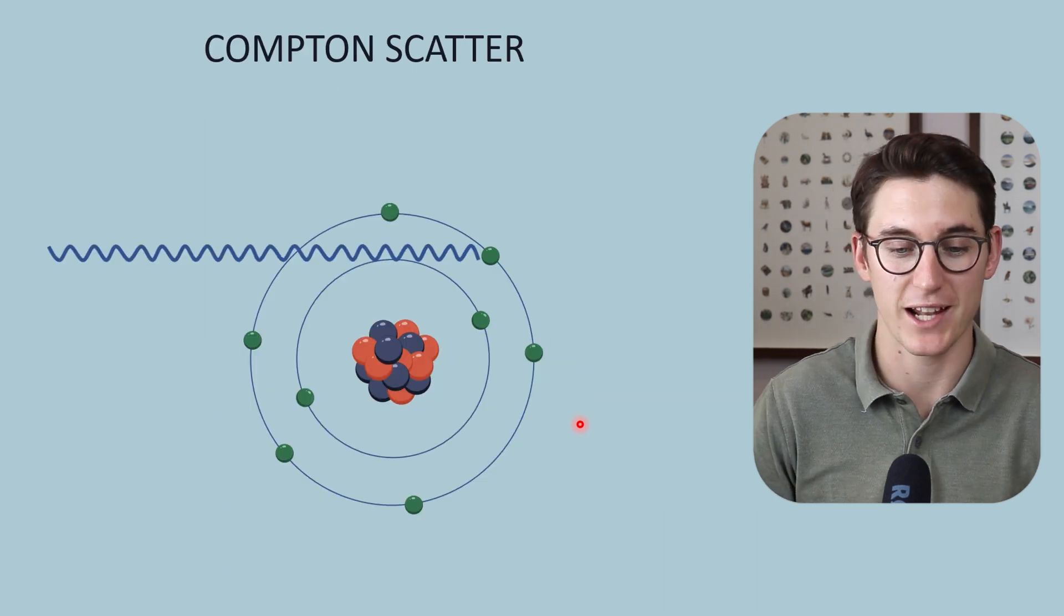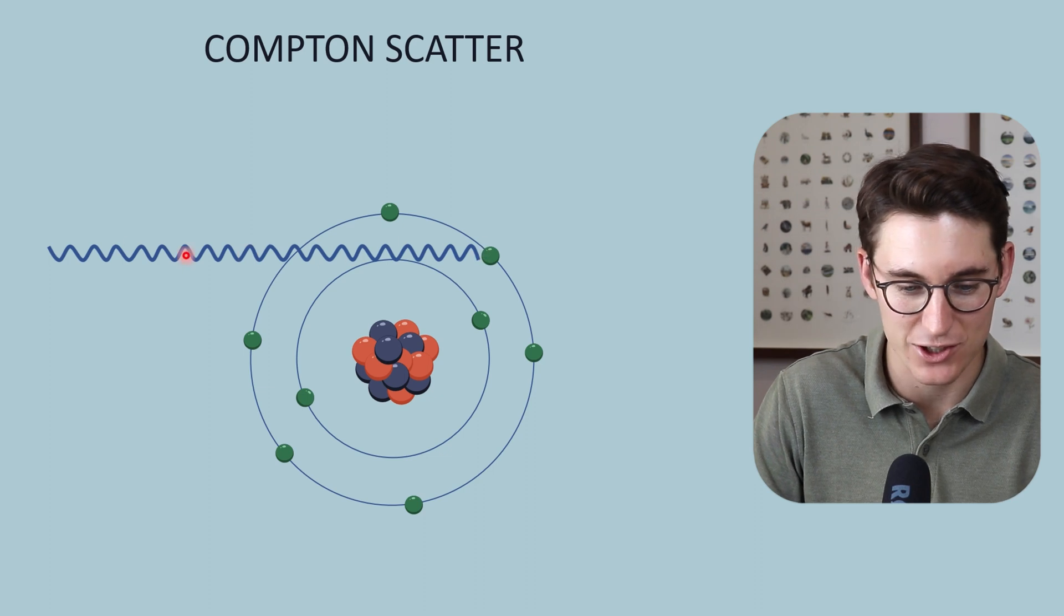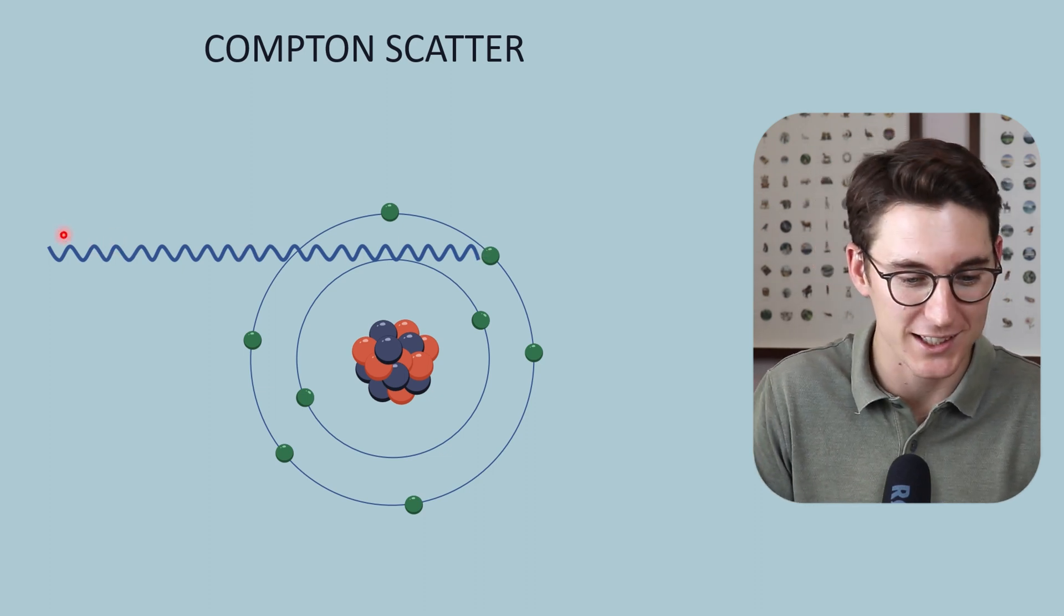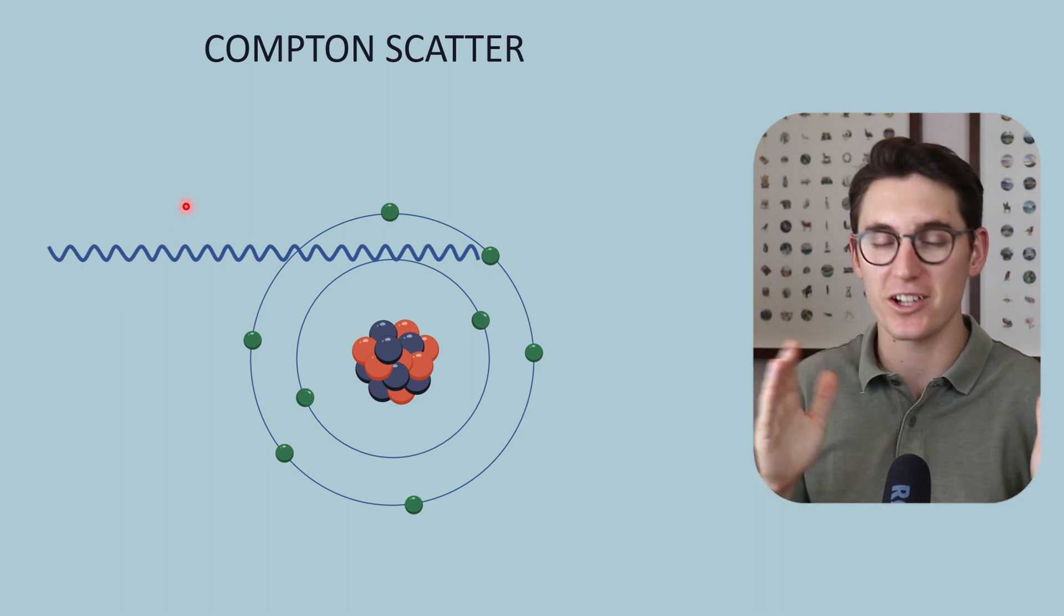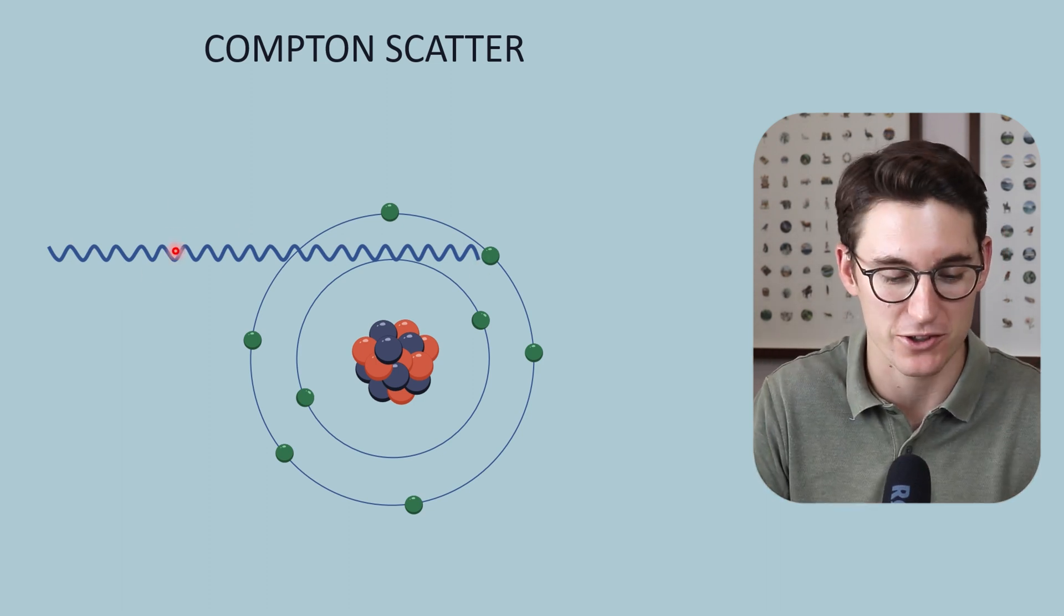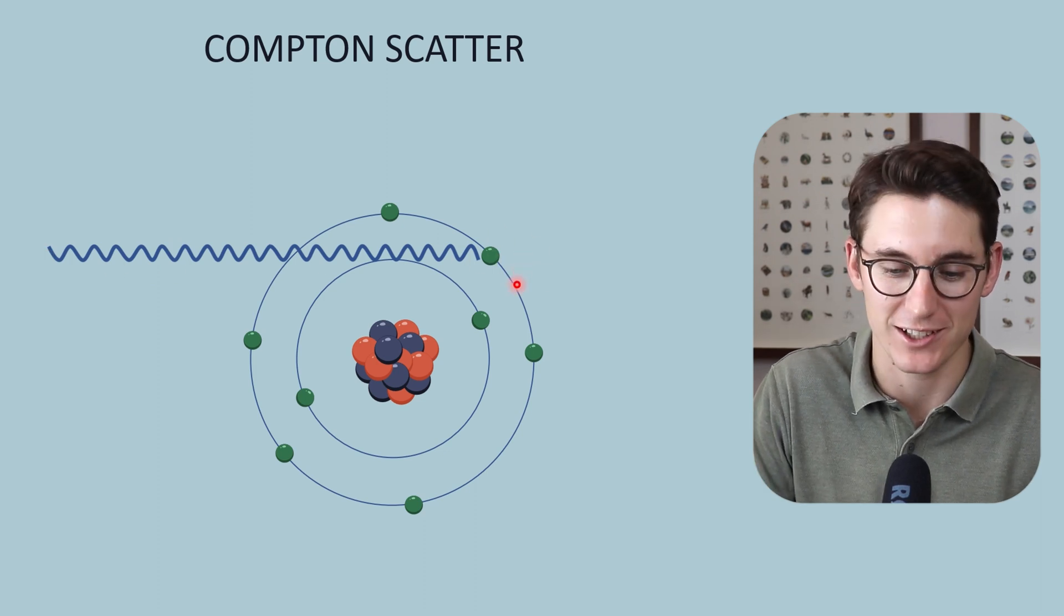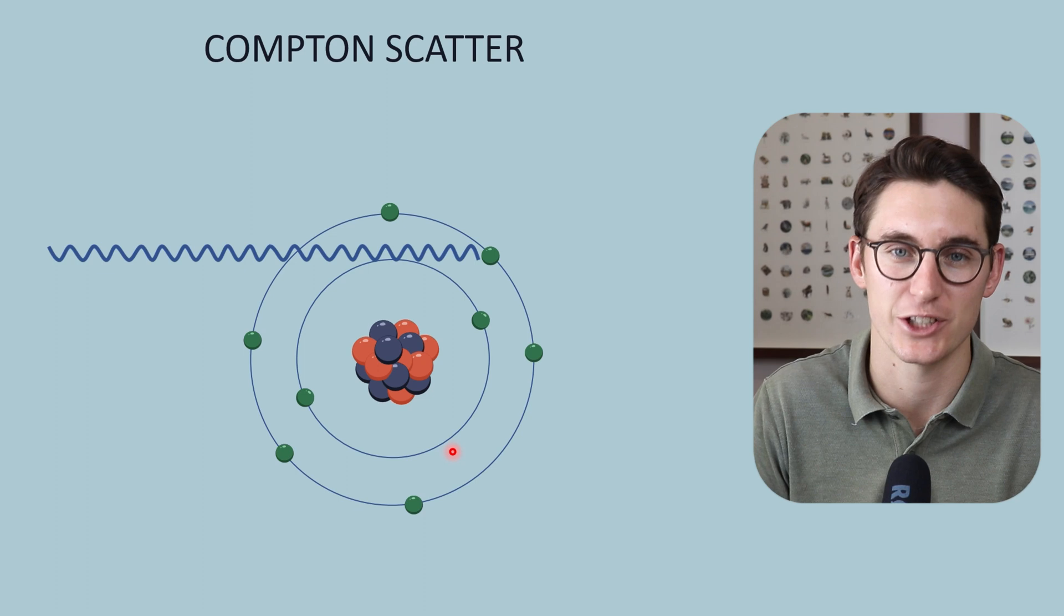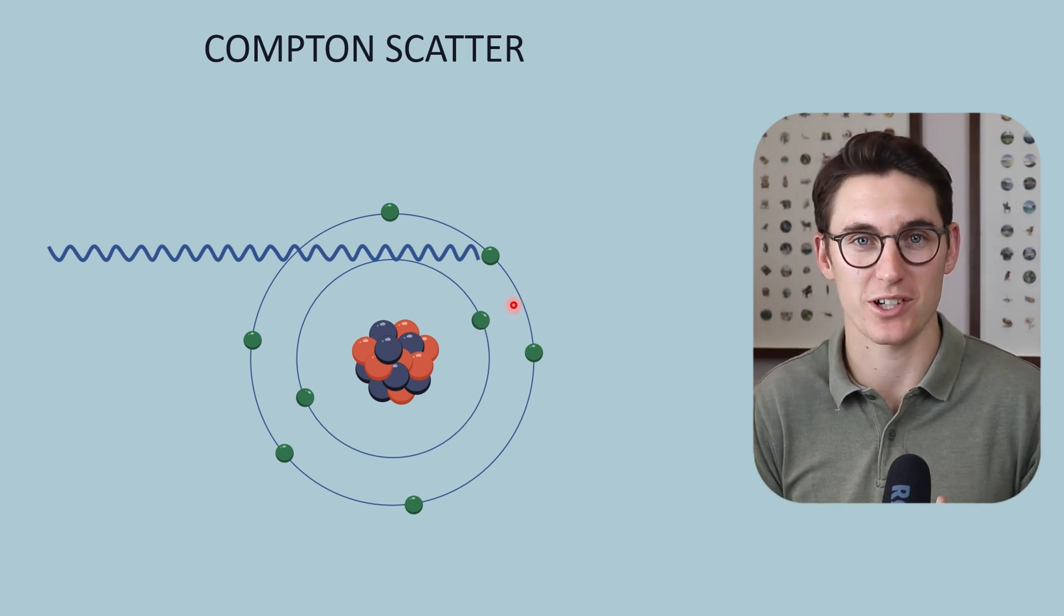Let's look at how Compton scatter occurs. We have an incident x-ray coming from our x-ray tube. These are either bremsstrahlung or characteristic radiations at varying energies in our x-ray spectrum. That incident x-ray then interacts with an outer shell electron in our patient's tissue. Unlike the photoelectric effect,